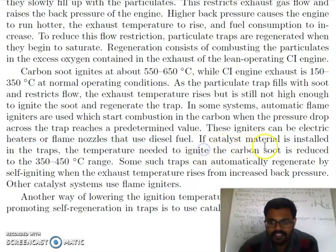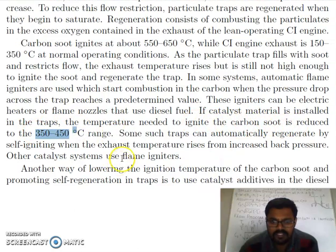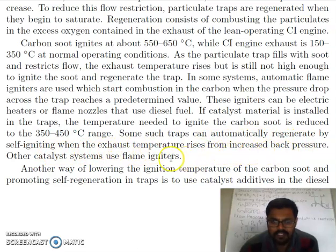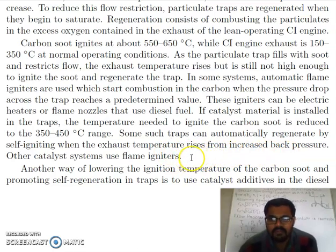If a catalyst material is installed in the traps, the temperature needed to ignite the carbon is reduced to 350 to 450 degrees Celsius. Some such traps can automatically regenerate by self-igniting when the exhaust temperature rises from increased back pressure. When back pressure increases, the traps self-ignite and burn all those particles to clear the path for gases.